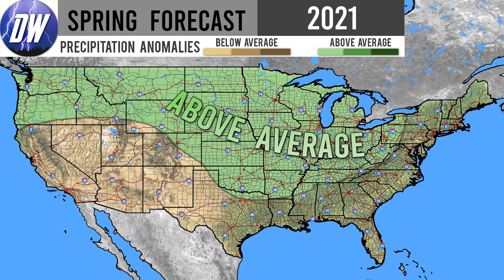First we're taking a look at the precipitation forecast, then the temperature forecast and the overall forecast. Here's our slightly above average precipitation region — this looks very similar to our winter forecast because we're stuck in the same teleconnections. We see that La Niña encouraging precipitation to come into the Northwest, into the Plains, and exit through the Ohio Valley, also expanding into severe weather alley for Oklahoma, Kansas, Missouri, Arkansas and surrounding states.